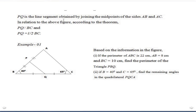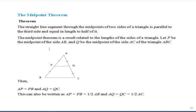PQ is a line segment obtained by joining the midpoints of sides AB and AC. According to the theorem, PQ is parallel to BC and PQ equals half of BC. Therefore, keep in mind that when a line is drawn between the midpoints of two sides of a triangle, that line is parallel to the third side and equal to half its length.